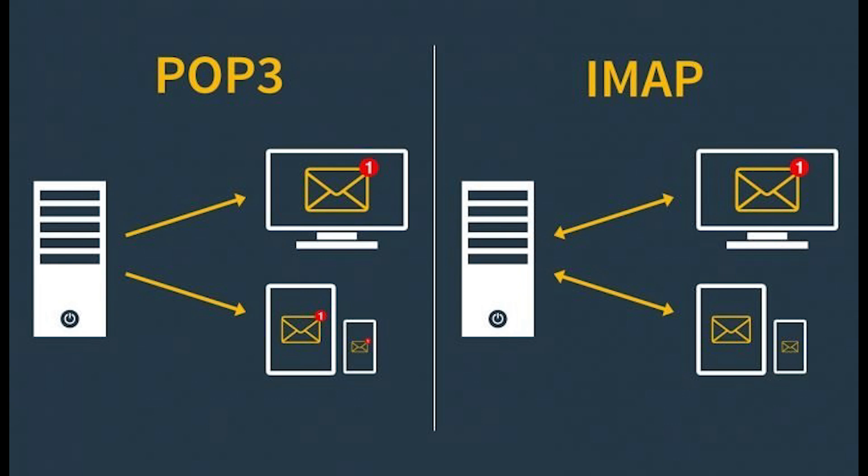Let's talk about the differences. POP can only be used on one device at a time, unlike IMAP, where messages can be accessed from multiple devices. Also, POP requires you to download the content, while IMAP allows you to read the content before downloading. POP doesn't allow you to search or organize email, nor create, delete, or rename email on the server, while IMAP does. POP does not allow users to sync emails, unlike IMAP.